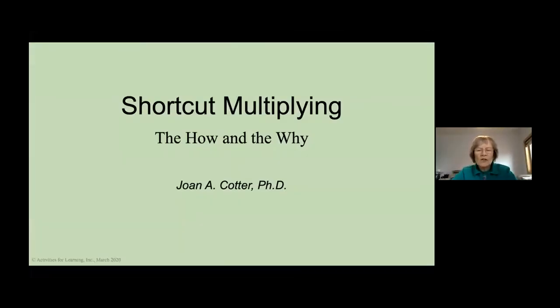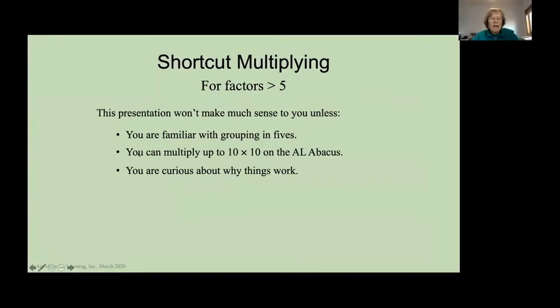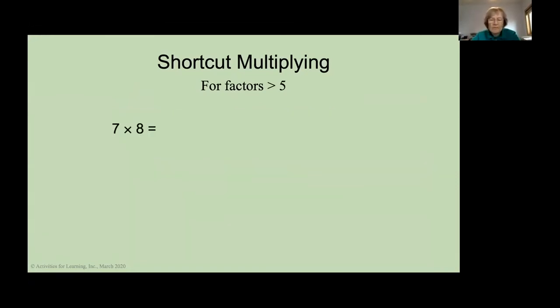I am going to show you about shortcut multiplying, which actually is in level D. This presentation won't make much sense to you unless you are familiar with grouping in fives. I hope everybody is. You can multiply up to 10 times 10 on the AL Abacus. That should be a given. And you are curious about why things work. So, let's do 7 times 8.